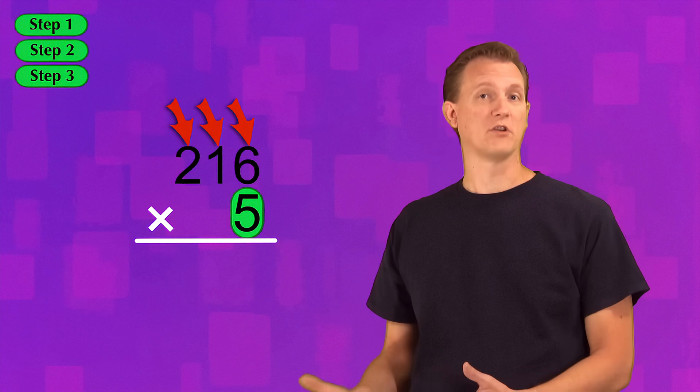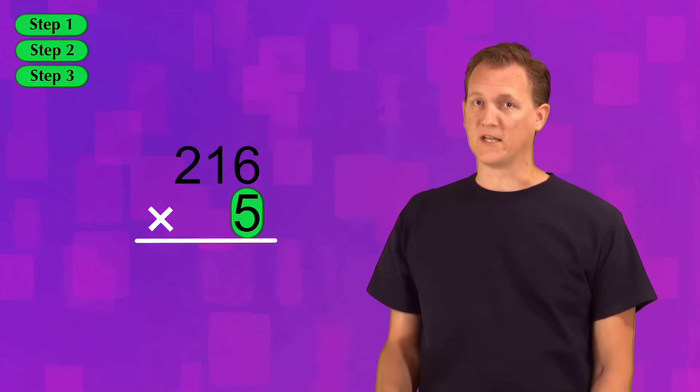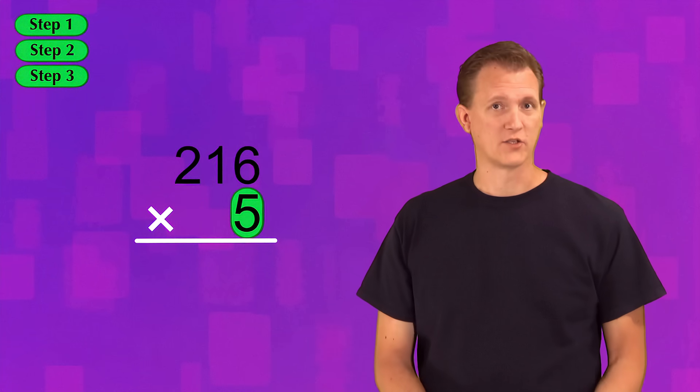You remember the procedure for multiplying when we have a one-digit bottom number, right? You break up the problem into a series of multiplication steps, one for each of the top digits. And in each step, you just multiply the bottom digit by a top digit, starting with the ones place and working your way left until you've multiplied all of the digits.